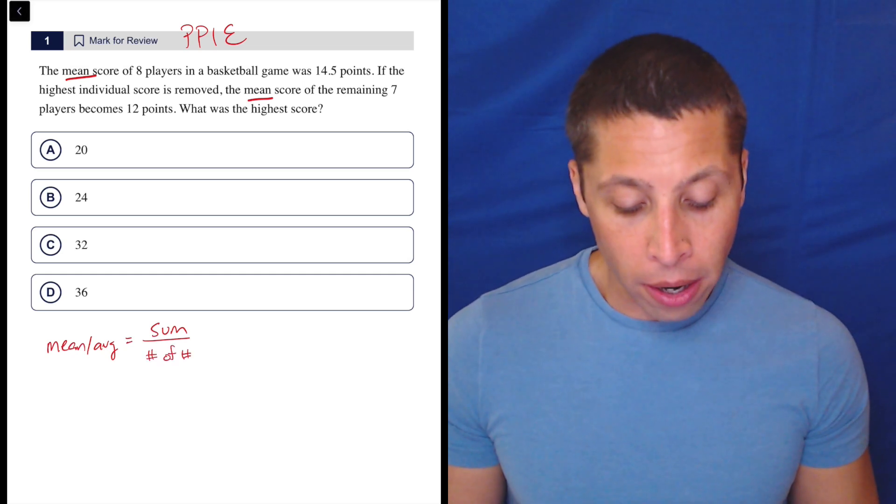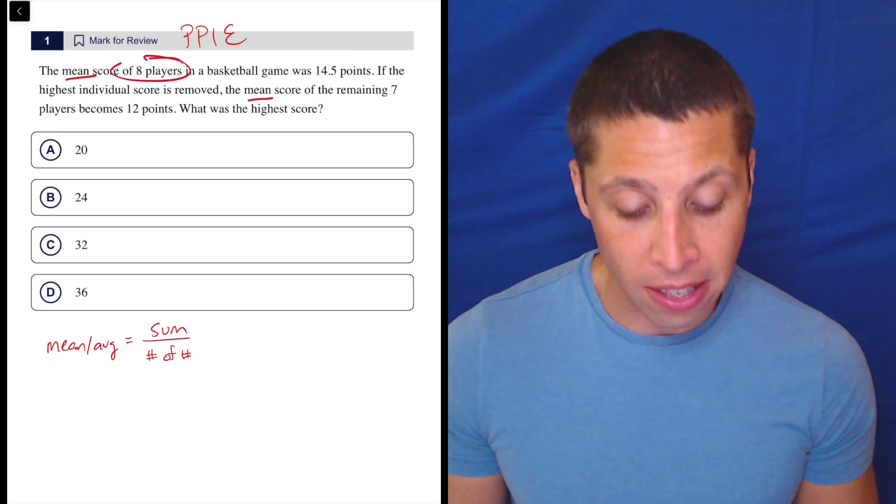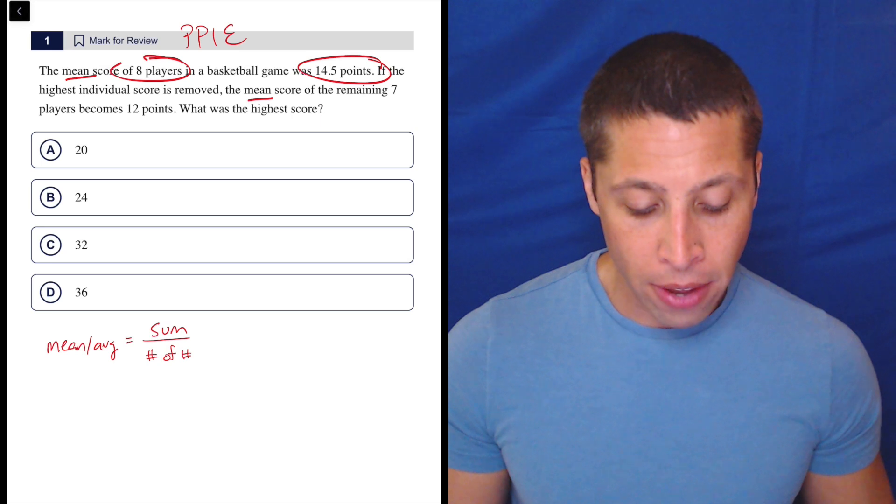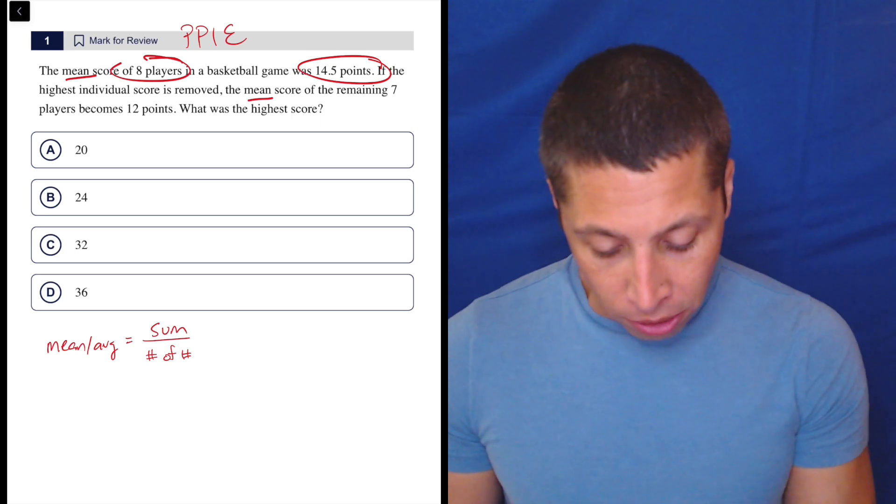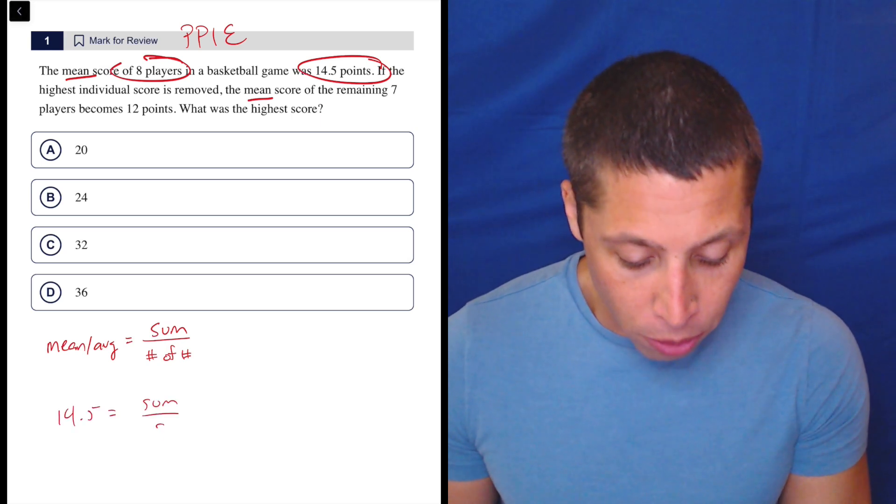So without thinking too hard, I realize I have two of the three pieces that I need. I have eight players, that's the number of numbers, and the mean was 14.5. So again, don't think about it too hard. 14.5 is my mean. My sum, I don't know, but I know the number of numbers is eight.